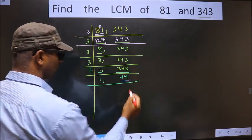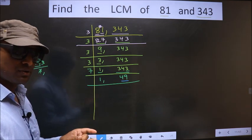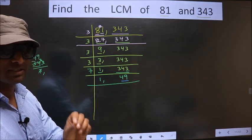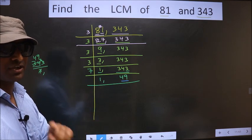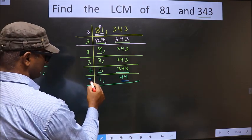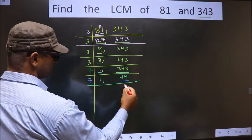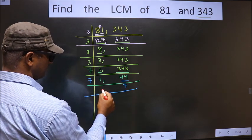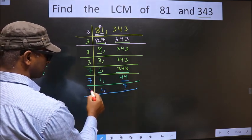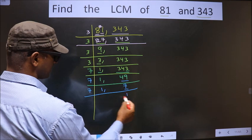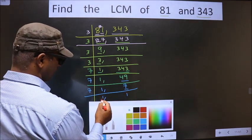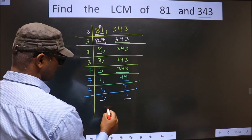Now here we got 49. Always remember 7 squared is 49 — 7 sevens 49. So here we take 7 sevens 49. 7 is a prime number, so we take 7 ones 7. Now we got 1 in both places.